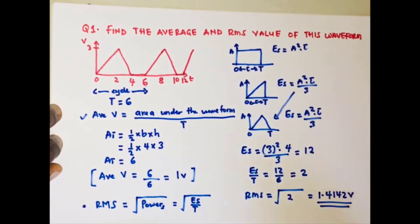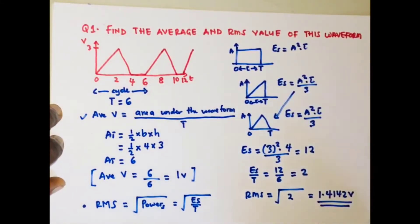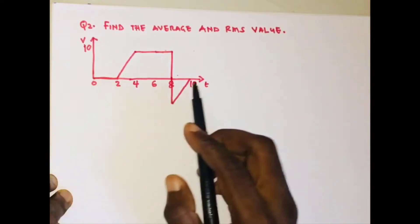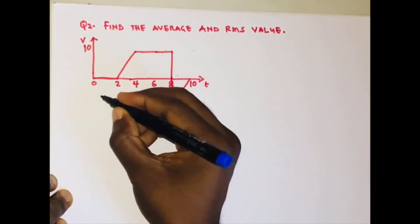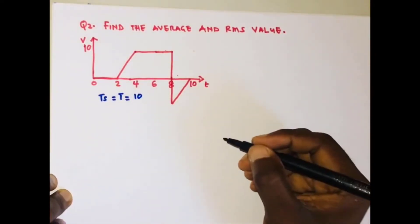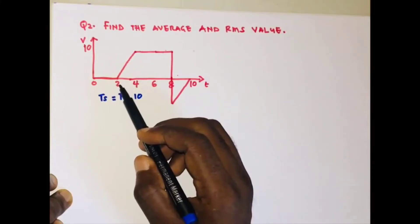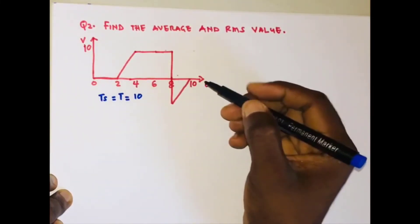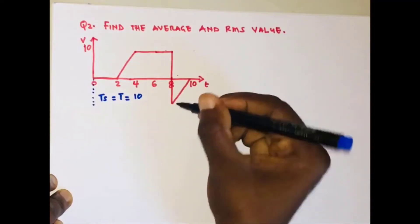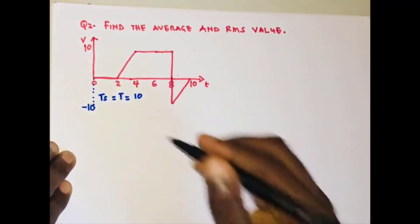Now let's solve the second question. We need to find the RMS and average values of this waveform. The cycle spans from 0 to 10, so the period T is 10. We have a trapezium from 2 to 8 and a triangle from 8 to 10. The amplitude of the signal is negative 10.